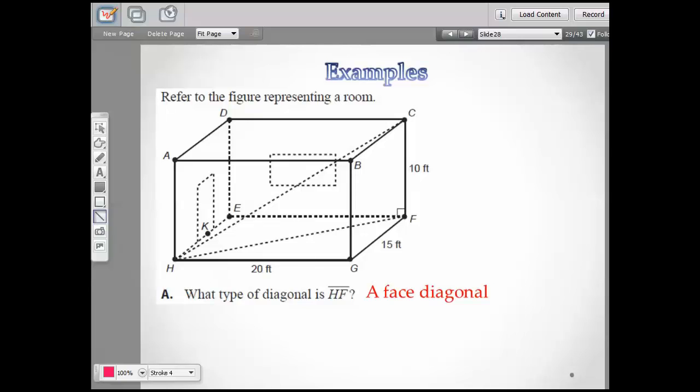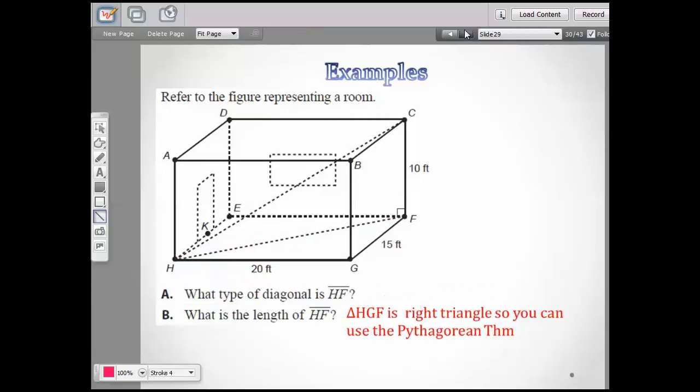It's a face diagonal. Alright. So it's the diagonal of the bottom face. Well, this one I just stuck the answer right up there. What is the length of segment HF? I know what I did. Well, if I got triangle HGF. It says that right there is a triangle. I'm wanting to find the length of segment HF.